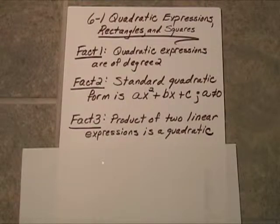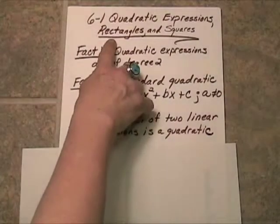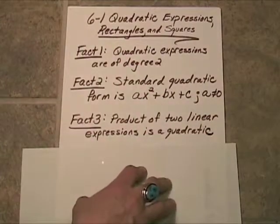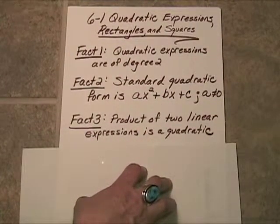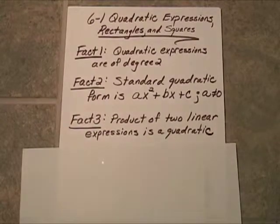Alright, so now let's take a look at an example where we take two linear expressions and we end up with a quadratic expression. Now, to do this we're going to move to a rectangle. Very simple application. We're going to look at length times width, algebraically.